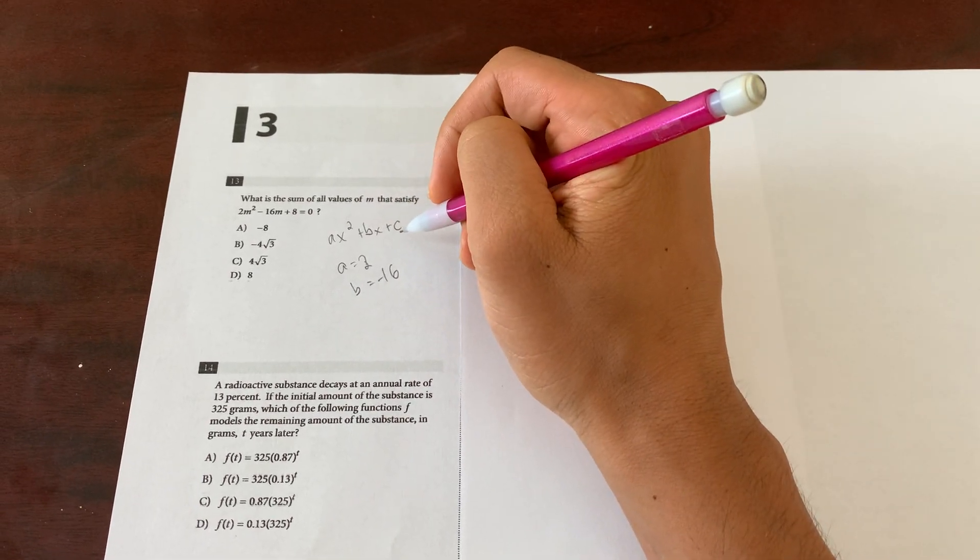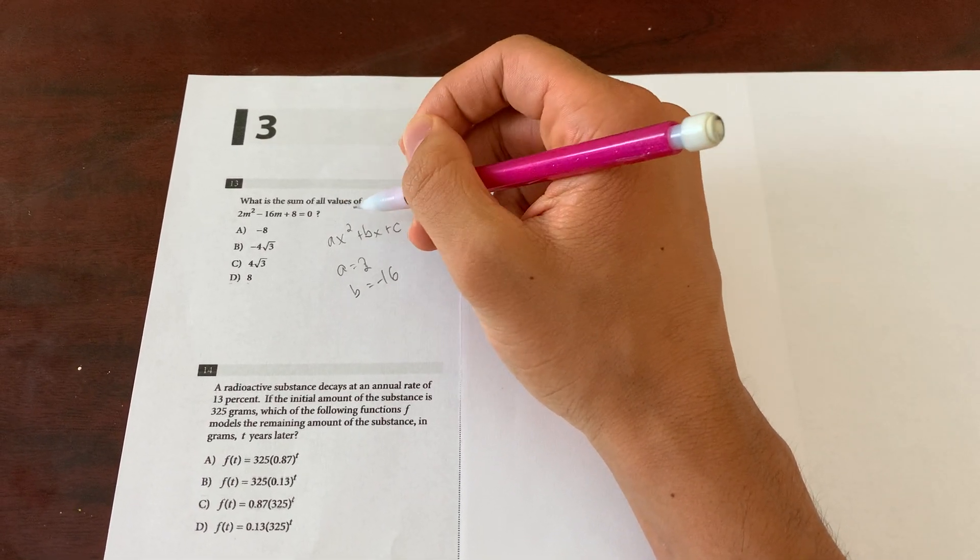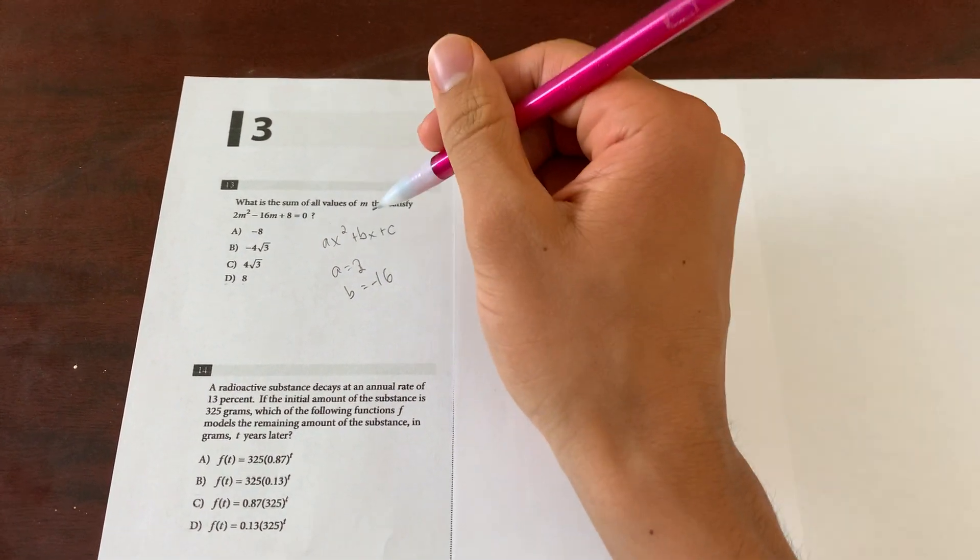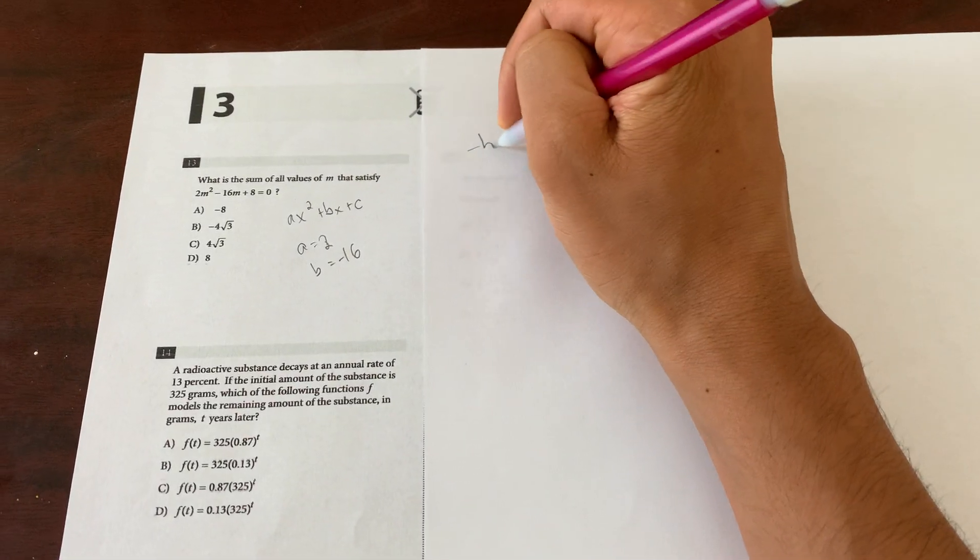A way of finding the sum of all values of m that satisfies the equation would be to either use the quadratic formula and then add the two solutions together, or do this: negative b over a.